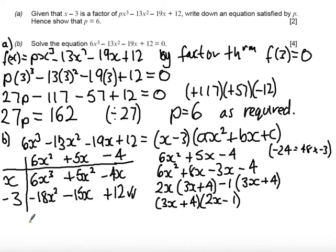So now we have the quadratic x minus 3 times, sorry, the cubic 3x plus 4 times 2x minus 1 is equal to 0.